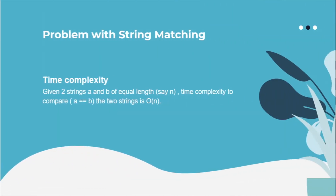So let's get started. The first thing is the problem with string matching and its solution using string hashing. When you want to compare two strings A and B of equal length — because if their lengths are not equal they cannot be equal — the complexity to compare A and B would be O(n) if you are applying the double-equals operator. Internally, each character of A and B will be compared: the i-th character of A is compared with the i-th character of B for checking equality.